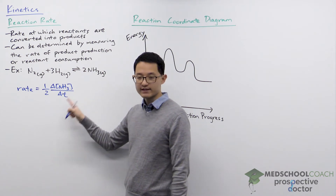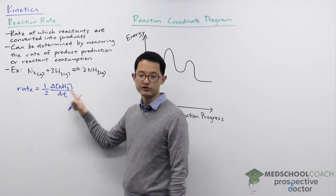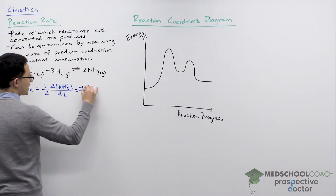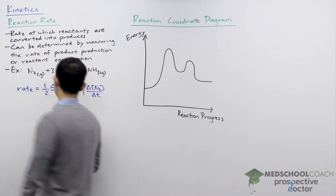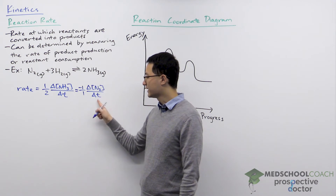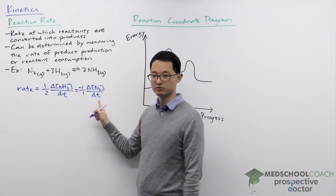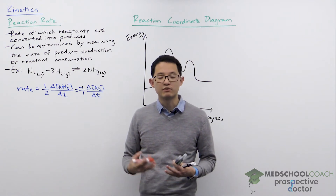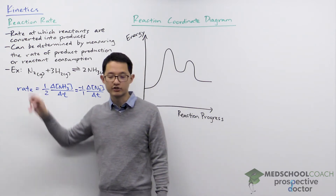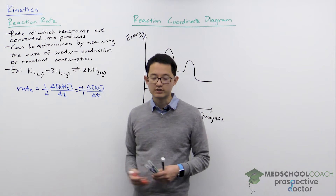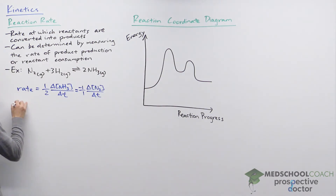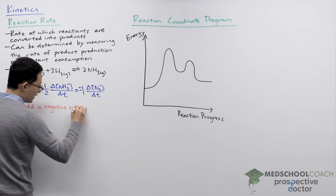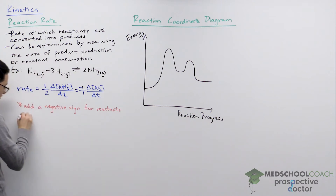With this expression, the faster ammonia is being produced, the greater this concentration will change over time. We can also write another expression: negative one over one, times the change in concentration of nitrogen over time. Here, instead of looking at a product being formed, we're looking at the rate at which the reactant nitrogen is being consumed. We have a negative sign because the reaction rate is always reported as a positive value, but the change in concentration of nitrogen is negative since it's decreasing. So make sure to add a negative sign for reactants.